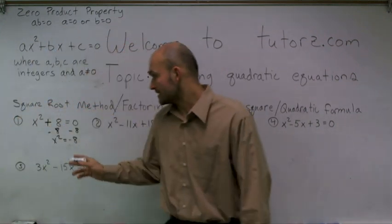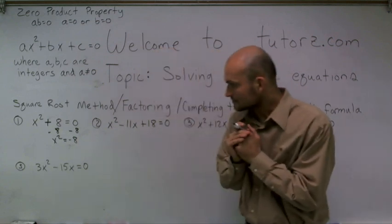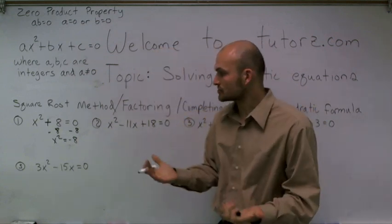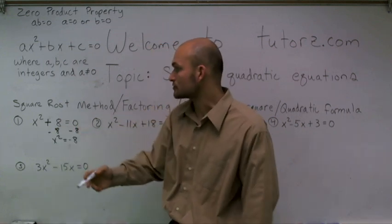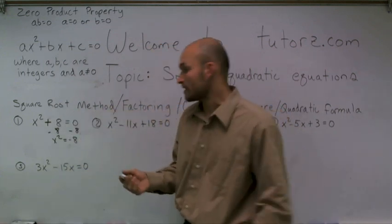Now my equation reads x squared equals negative 8. So to solve for my x, I need to undo the squaring by taking the square root. Hence why I would call it the square root method.